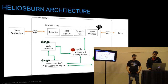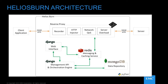Here we have the architecture diagram for Helios Burn. We can see all the different components. Starting in the middle, we have Redis — we use Redis for all the communication within Helios Burn, and we also use Redis as a caching service. We have the Management API, which also acts as an orchestration engine. We expose a set of resources there and it communicates via Redis to the proxy, giving orders to the proxy to start listening, to stop, to change the upstream server, and other parameters.